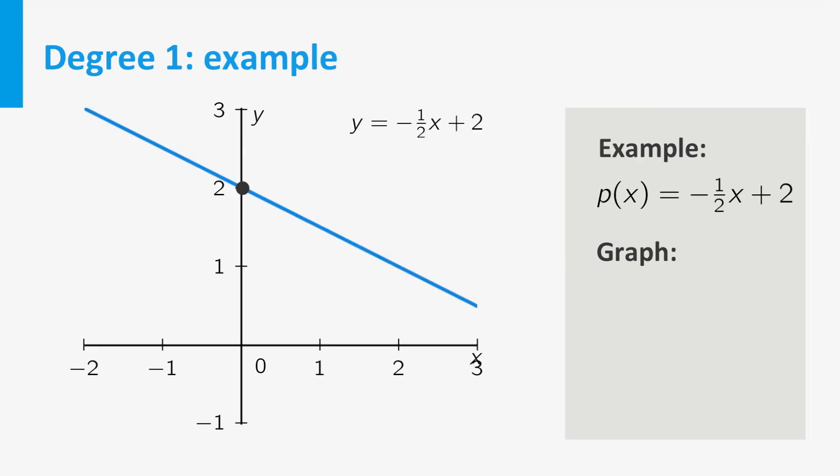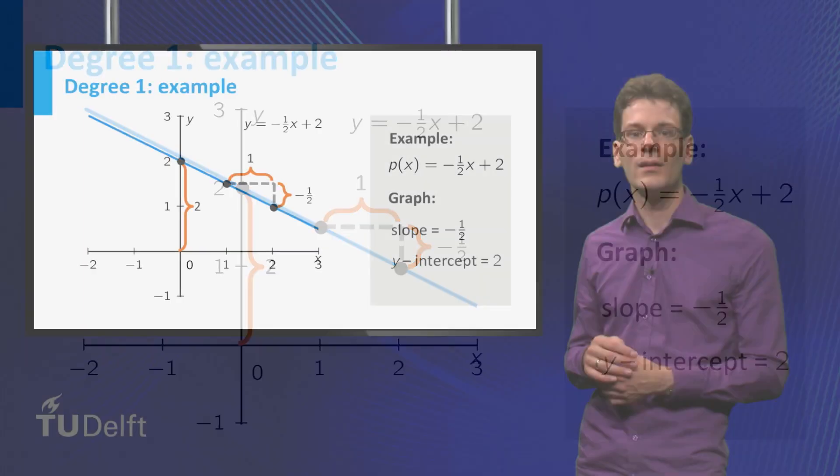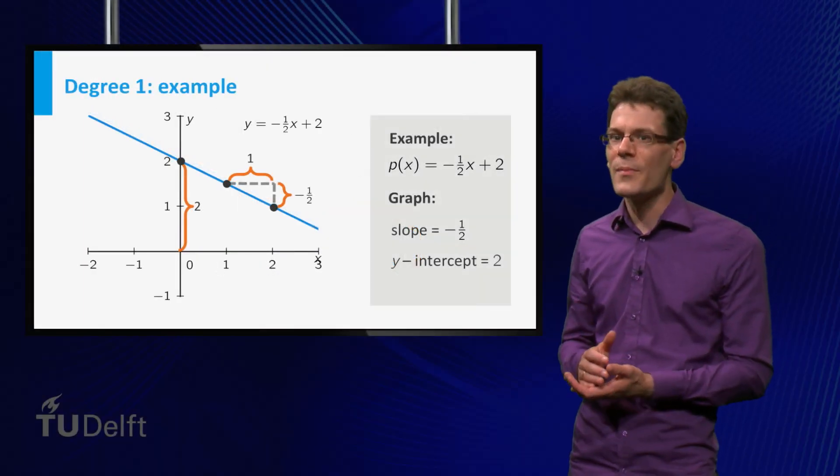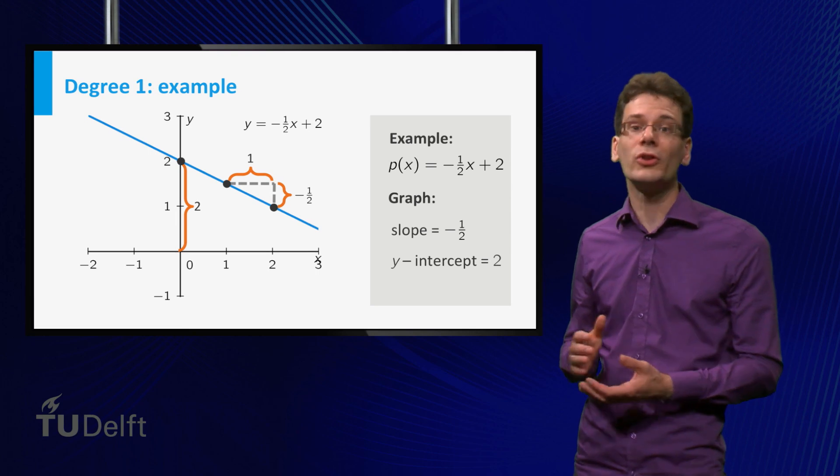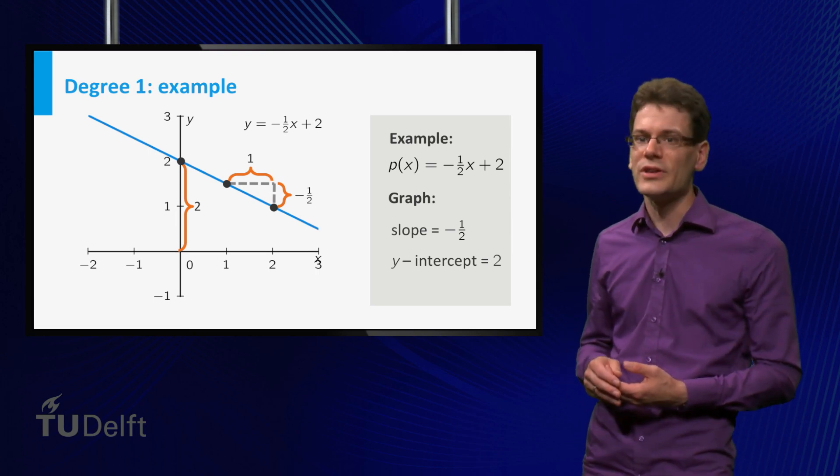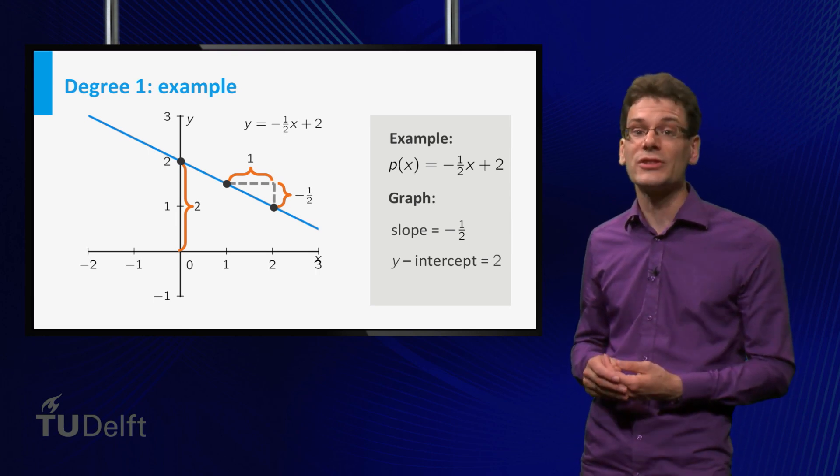For example, let's look at the graph of the linear function p(x) equal to minus 1 half x plus 2. Indeed you see from the graph that the slope equals minus 1 half and the y-intercept equals 2. It is surprising how many dependencies between everyday quantities can be modeled by linear functions. You will see examples of such dependencies in the exercises.